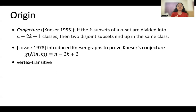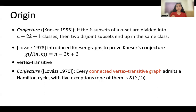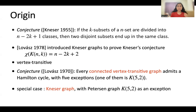These graphs are vertex transitive, meaning the graph looks the same from the point of view of every vertex. Lovász already had a conjecture from 1970 that every connected vertex transitive graph admits a Hamilton cycle, with five exceptions, one of which is the Kneser graph when n is 5 and k is 2 — the Petersen graph. Thus, Kneser graphs being vertex transitive form a very special case for this general conjecture of Lovász's from 1970.